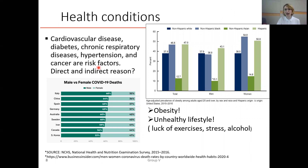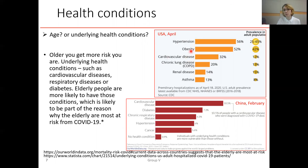Why are these specific diseases highlighted and not others? Here we can see data showing how high obesity levels are in the USA across the whole population, not just the elderly. That is why we present this data about obesity and hypertension for the elderly group and their contribution to mortality rate in the USA.